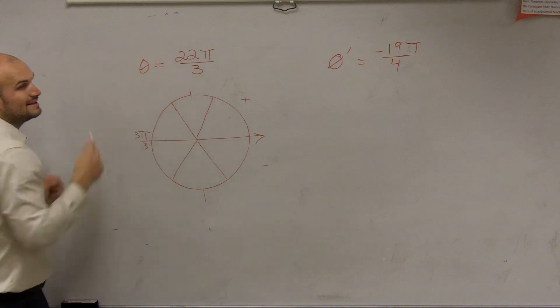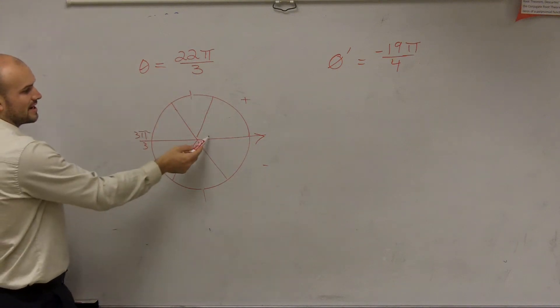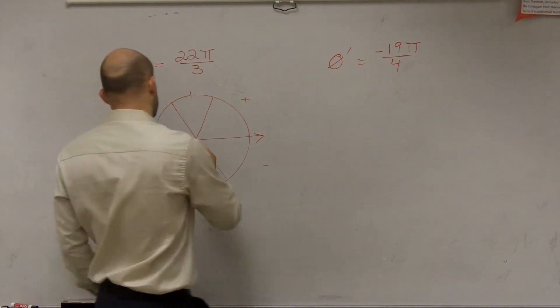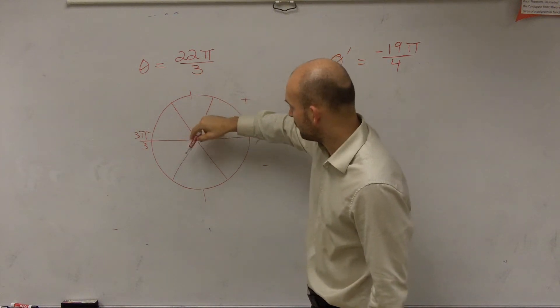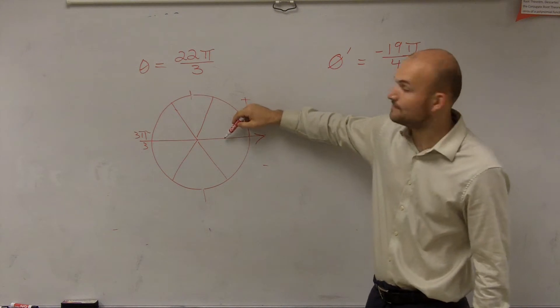So you could say, now I need to get to 22, though. So you can say 1π, 2π, 3π over 3, 4π, 5π, 6π over 3, which is equivalent to 2π.